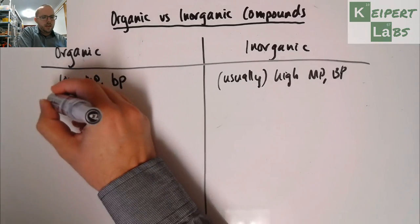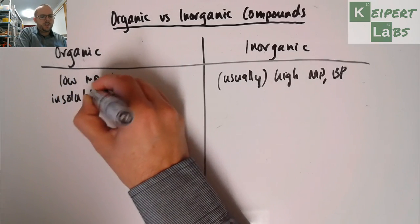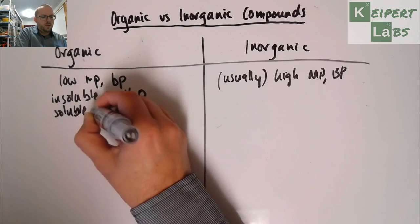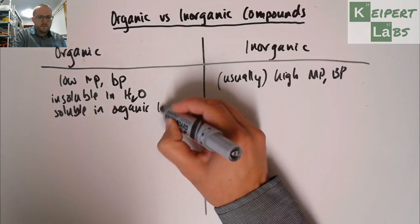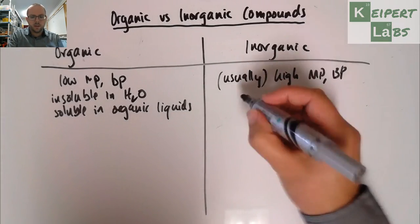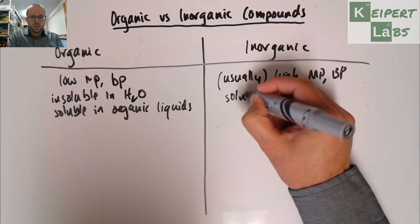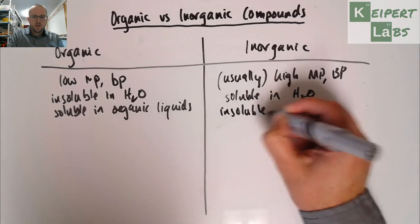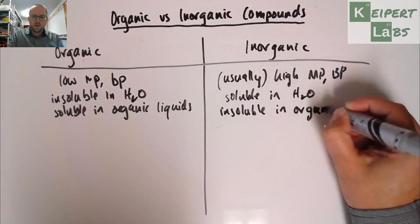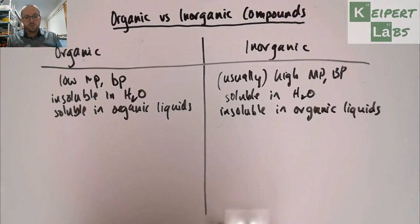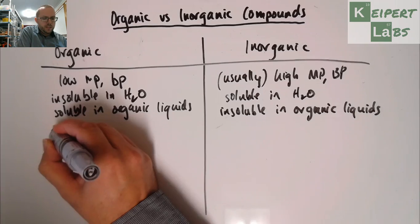We're thinking that organic substances are usually insoluble in water, but soluble in organic liquids, so ethanol or hexane or other things like that. Whereas, we're typically thinking the other way around here. So, usually soluble in water, whereas insoluble in organic liquids. Because that's going to affect what we can do in wet chemistry techniques in the lab, how we might structure them.